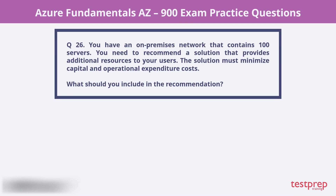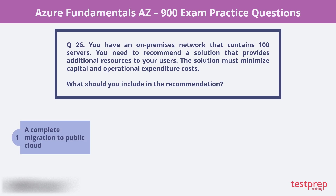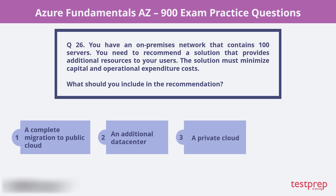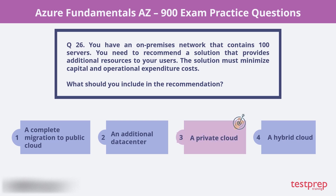Question 26. You have an on-premises network that contains 100 servers. You need to recommend a solution that provides additional resources to your users. The solution must minimize capital and operational expenditure costs. What should you include in the recommendation? 1. A complete migration to the public cloud. 2. An additional data center. 3. A private cloud. 4. A hybrid cloud. The correct answer is 3, a private cloud.